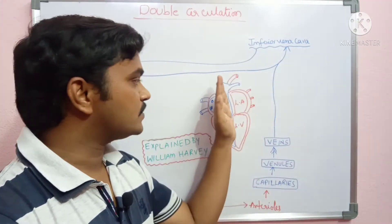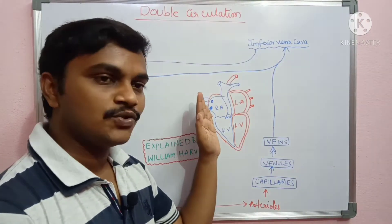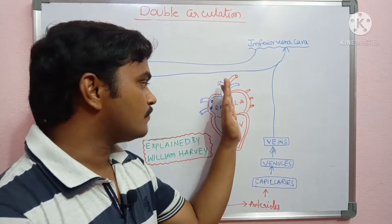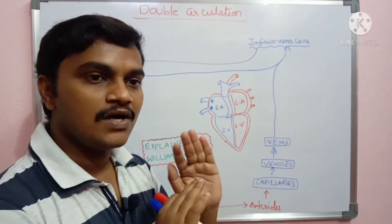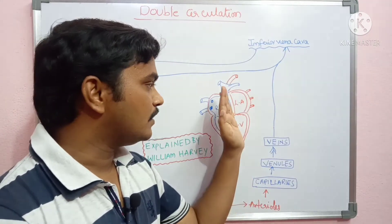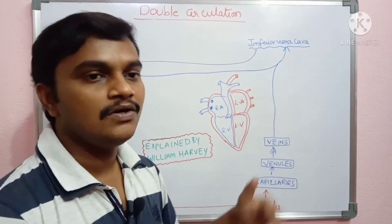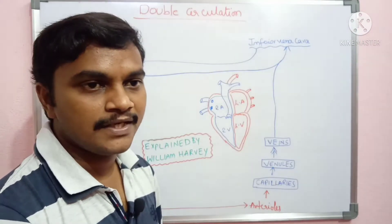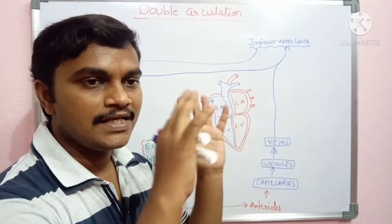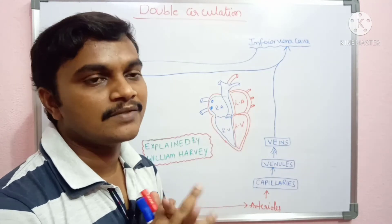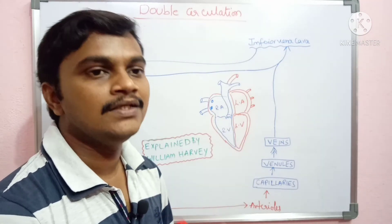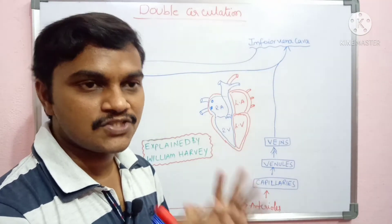So, one side carries deoxygenated blood and the other half carries oxygenated blood. It is circulated out, and this is called double circulation.